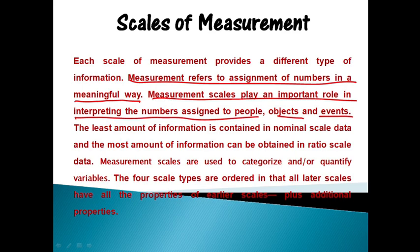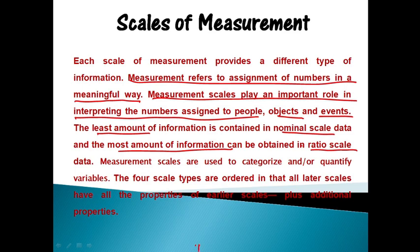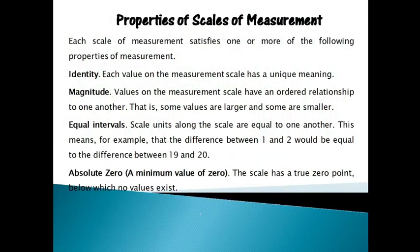The least amount of information is contained in the nominal scale and the most amount of information can be obtained in the ratio scale, because as we go from simple to complex, the most complex is the ratio scale. The four scale types are ordered in that all later scales have all the properties of earlier scales. So arranged as NOIR: nominal is the simplest, followed by ordinal, then interval, and ratio. Ordinal contains all properties of nominal; interval contains properties of both ordinal and nominal; and ratio scale contains properties of all three plus its own additional properties.